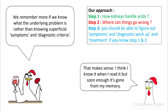We'll go three steps. First, we'll learn how kidneys handle acid. Next, we'll see where things can go wrong. And once you know steps one and two, you should be able to figure out the signs and symptoms of RTAs, diagnostic workup, and treatments.